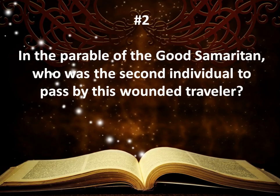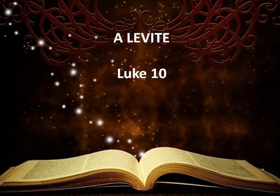Number two: In the parable of the Good Samaritan, who was the second individual to pass by this wounded traveler? The answer is a Levite. That story is in Luke chapter 10.